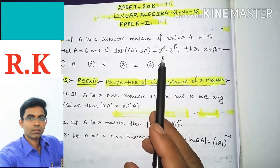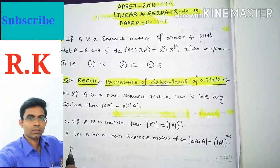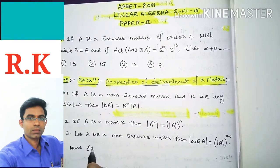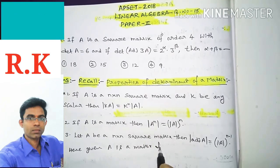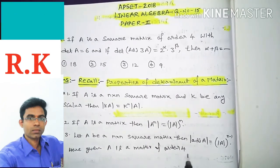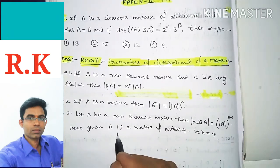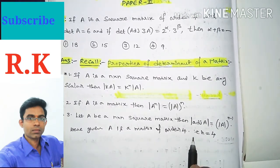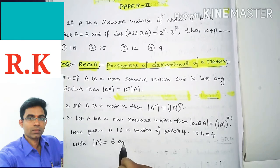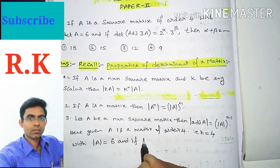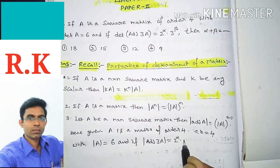To solve the given problem we will use these properties of determinants. Coming to the solution: given A is a matrix of order 4, that is n equals 4, with det(A) equal to 6. We are given that det(adj(3A)) equals 2^alpha times 3^beta, and we need to find the value of alpha plus beta.